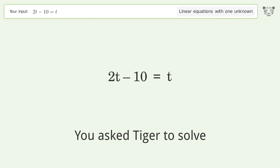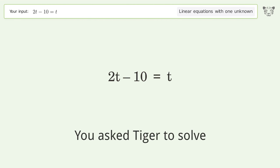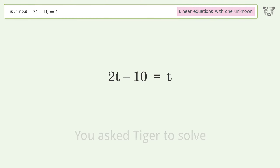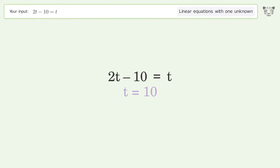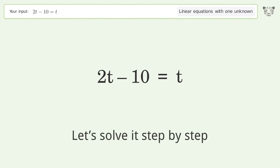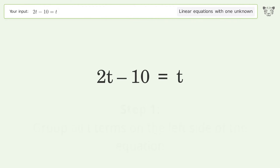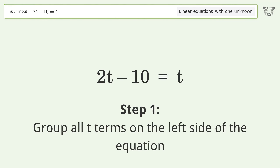We ask Tiger to solve this — it deals with linear equations with one unknown. The final result is t equals 10. Let's solve it step by step. First, group all t terms on the left side of the equation.